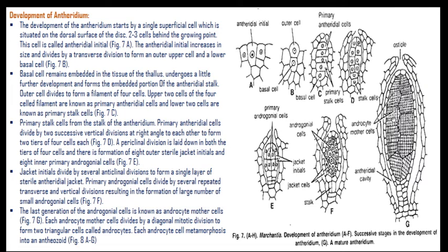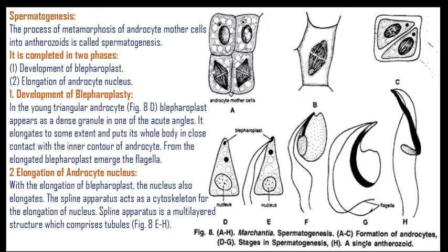The mature antheridium develops biflagellate structures called antherozoids. The thallus cells behave as antheridial mother cells, leading to complete development of a mature antheridium. The process of metamorphosis of androcyte mother cells into antherozoids is called spermatogenesis. The androcyte mother cell is converted into a triangular structure called an androcyte, and later when flagella develop, they are called antherozoids.